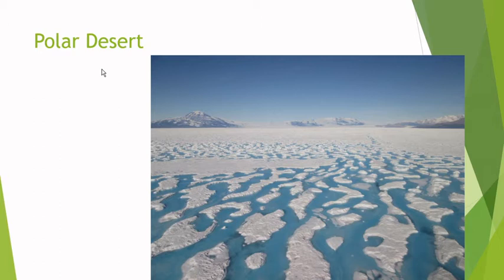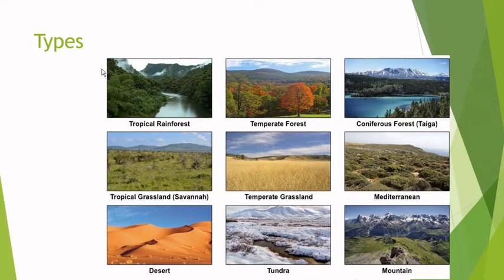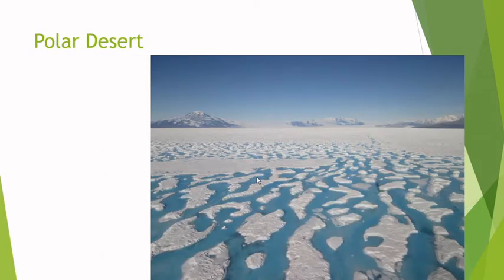We're going to continue with the terrestrial ecosystems. We've covered the types, and we can find them in very cold polar zones, temperate zones, or tropical zones where it's usually very hot.